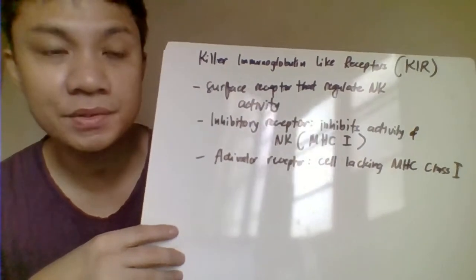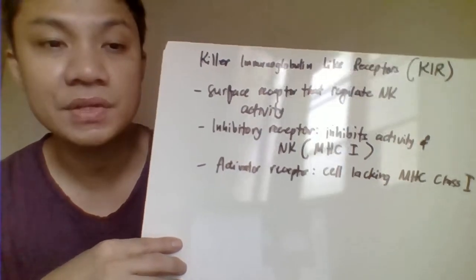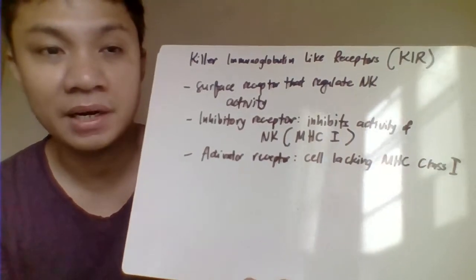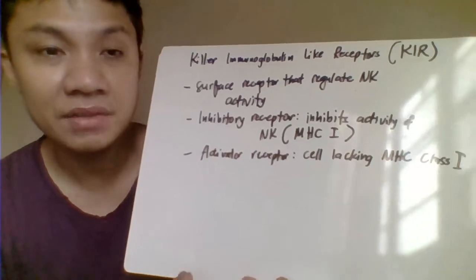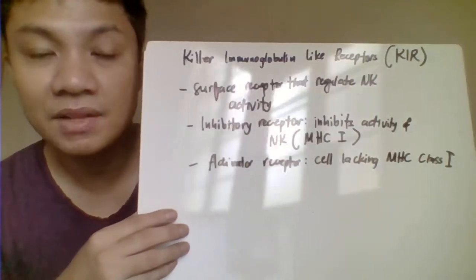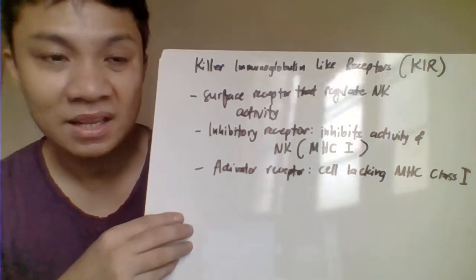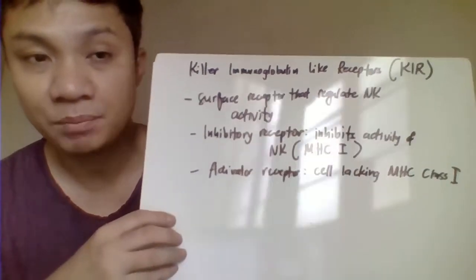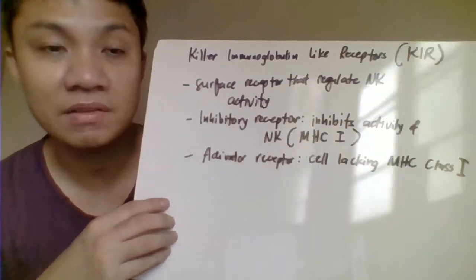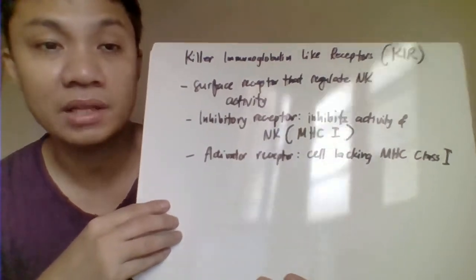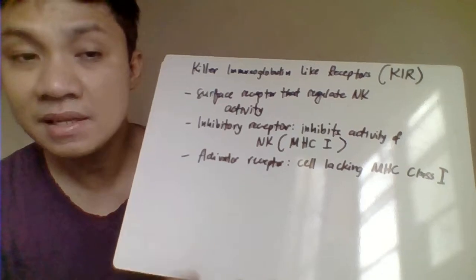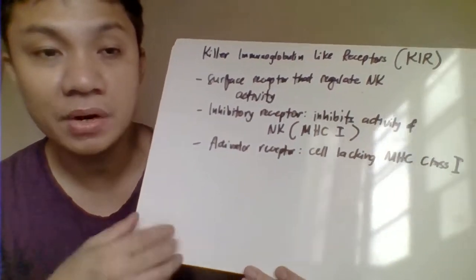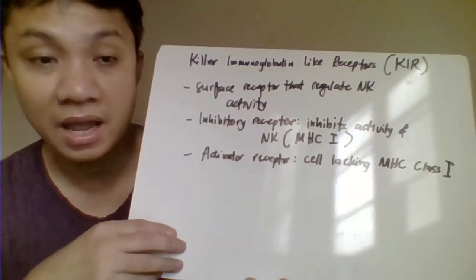A cell should also express MHC class 1 to be considered a self-antigen or self cell. If the cell does not express MHC class 1, that activates the activatory receptor, which activates the cytotoxic activity of the NK cell, and the NK cell will kill that cell. The NK cell needs to identify that a cell possesses an inhibitory receptor to prevent its cytotoxic activity.